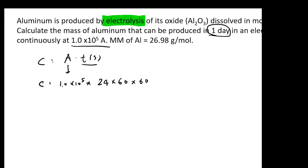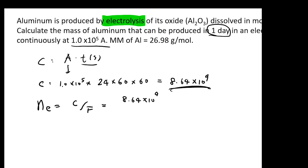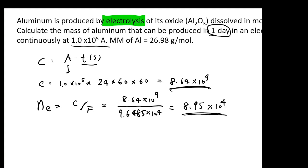Performing the calculation gives a total charge of 8.64 × 10⁹ coulombs. The next step is to convert that charge into number of moles of electrons. Dividing the charge (8.64 × 10⁹ C) by the Faraday constant (9.6485 × 10⁴ C/mol) gives you 8.95 × 10⁴ moles of electrons.